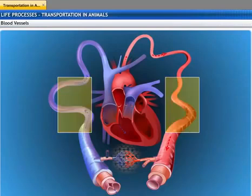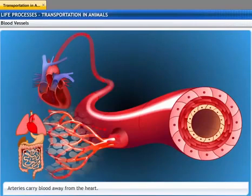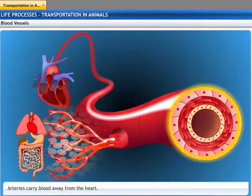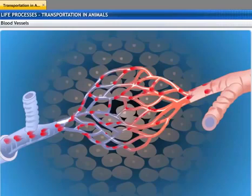Blood vessels are comprised of arteries and veins. Arteries are the blood vessels which carry oxygenated blood away from the heart to various organs in the body. When the blood flows out from the heart, it is at high pressure. To withstand this pressure while transporting the blood, the walls of the arteries are thick and elastic. On reaching an organ or tissue, the artery divides into smaller vessels so that the blood can reach each individual cell.